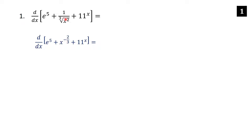To get x to the negative two thirds: the two is the power, the cube root means three becomes the denominator of the power, and moving it from the denominator to the numerator negates the exponent. Now we're ready to take the derivative.